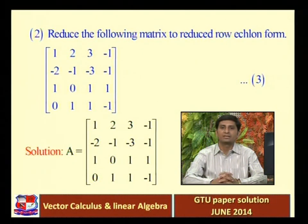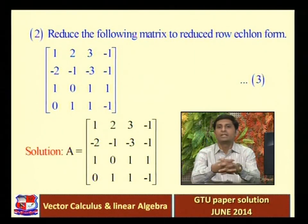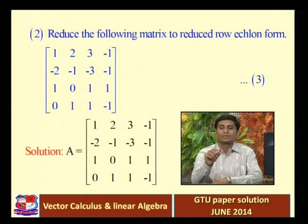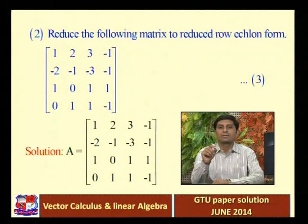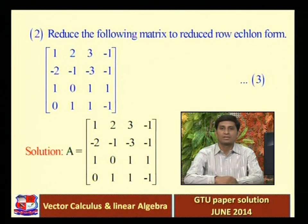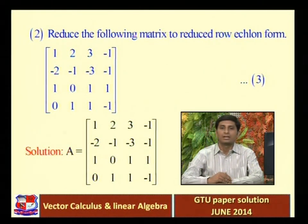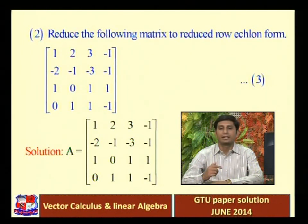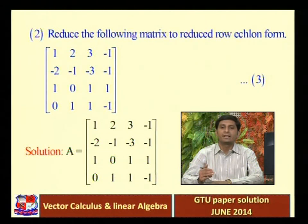A matrix is in Row Echelon Form if it satisfies three conditions: First, the leading entry (the first non-zero element) in any row must have all zeros below it in that column. Second, any zero row must be at the bottom of the matrix. Third, when going from top to bottom, the leading entry always moves from left to right.